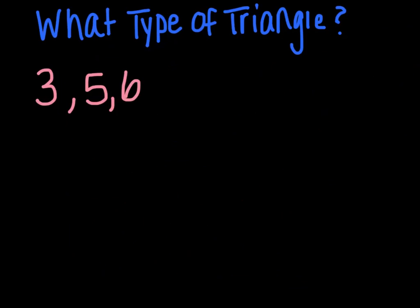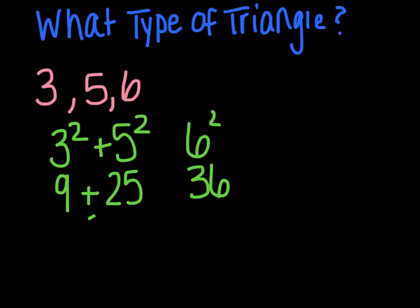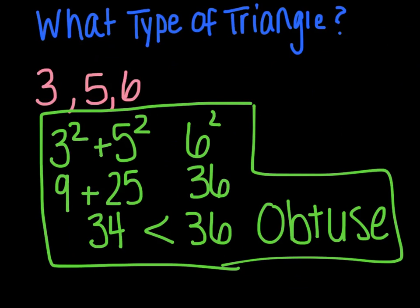Let's figure out the type of triangle formed by side lengths 3, 5, and 6. I'm going to take my two shorter sides and square them, add them together, and see how it compares to the square of my third side. 3 squared is 9, 5 squared is 25, and 6 squared is 36. 9 plus 25 is 34, and 34 is less than 36. Since the sum of the squares of the two shorter sides is less than the square of the third side, an obtuse triangle results.